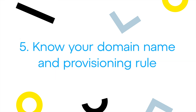Fifth, you should know what your domain name is as well as your provisioning rule for your company. The domain name can be found in your admin portal. Later in this video, I'll let you know what GoTo's provisioning rule is, and I've added that to the description. I've also included a playlist in the description with several videos that help with the steps I mentioned.